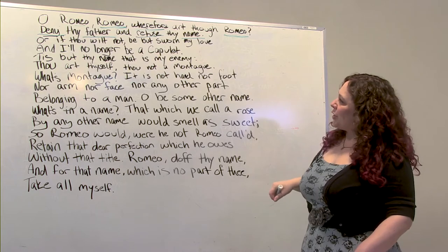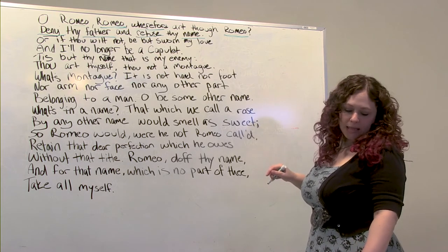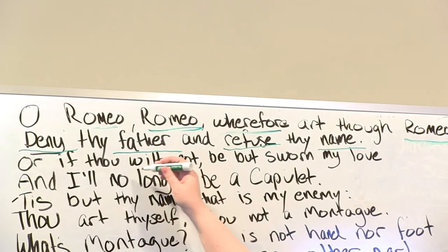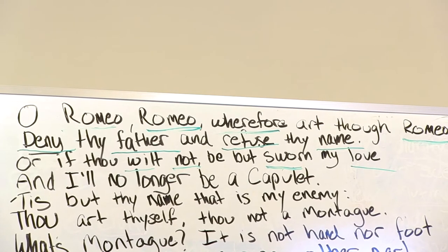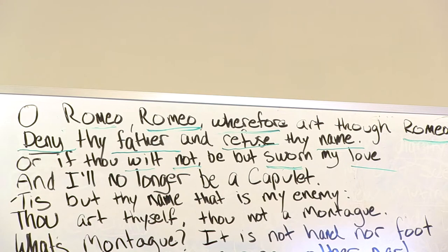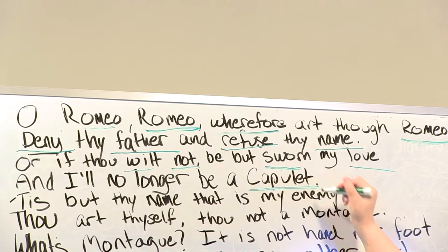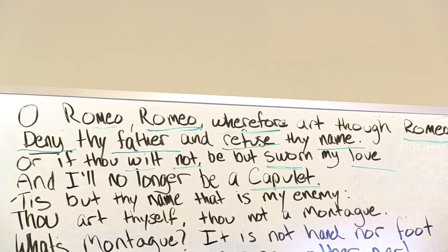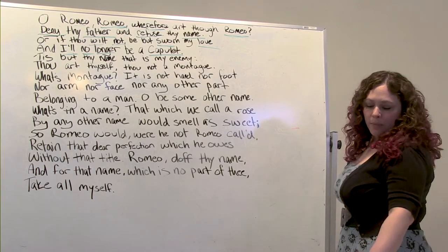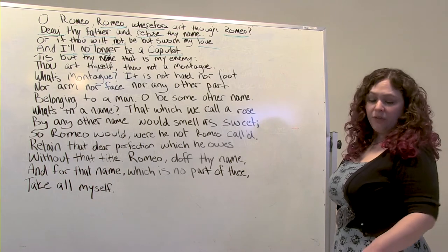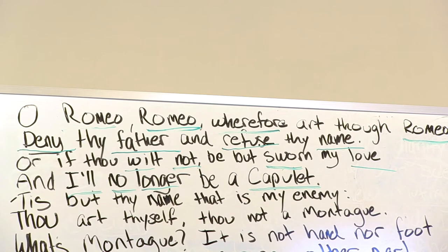Now the next line is a little trickier: Or if thou wilt not, be but sworn my love. I'm going to go with 'wilt not, sworn love.' And then: And I'll no longer be a Capulet. Anytime we say a name, that feels important — so let's look at Capulet. What's she not going to be anymore? She's not going to be a Capulet. So 'I'll no longer.' So what we have so far: Romeo, Romeo, wherefore Romeo? Deny father, refuse name. Wilt not? Sworn love, I'll no longer Capulet.